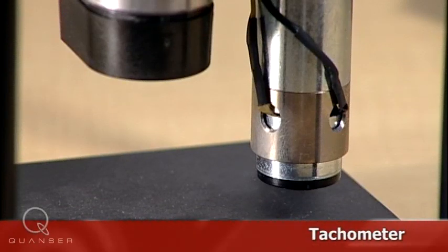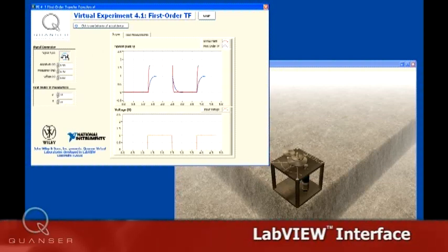The speed of the load shaft can be measured using the tachometer. The objective is to find a model that represents the rotary servo system.